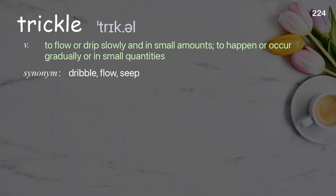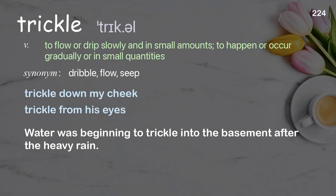Trickle: to flow or drip slowly and in small amounts; to happen or occur gradually or in small quantities. Examples: trickle down my cheek; trickle from his eyes. Water was beginning to trickle into the basement after the heavy rain.